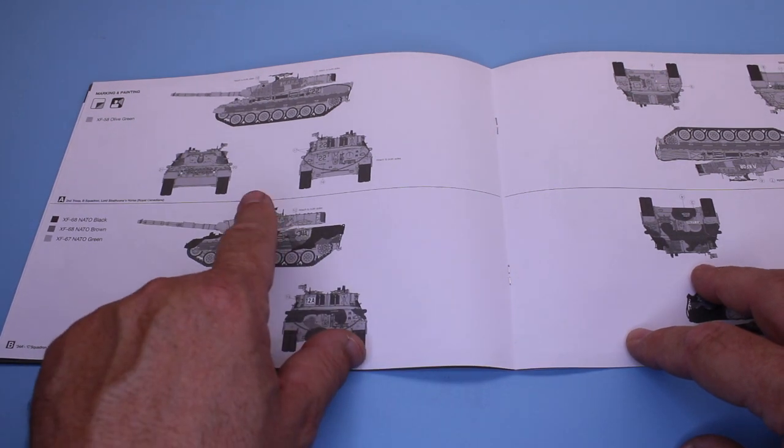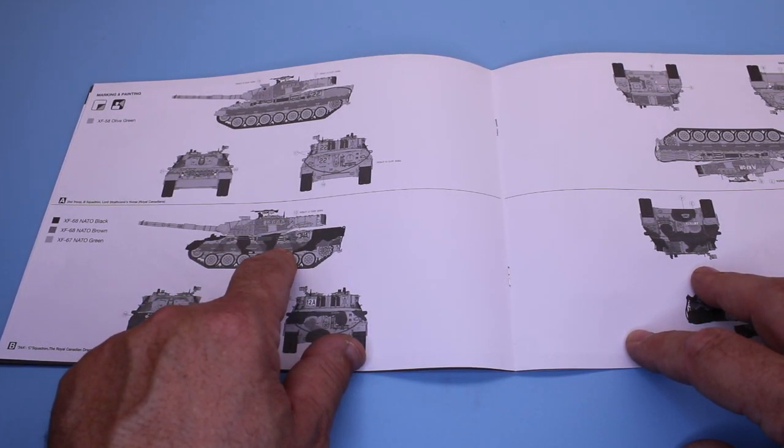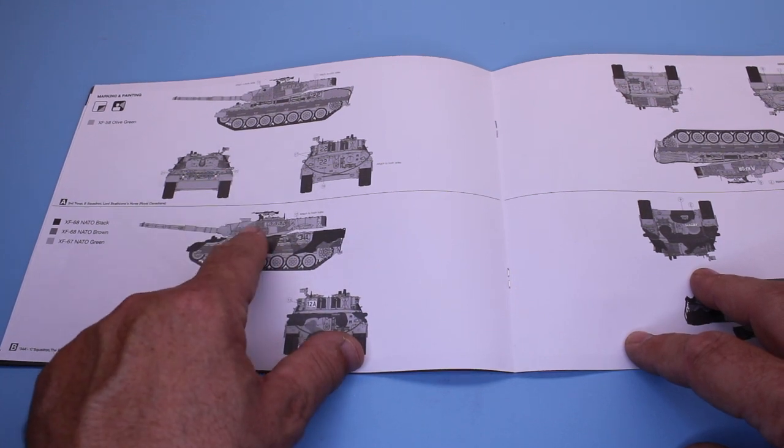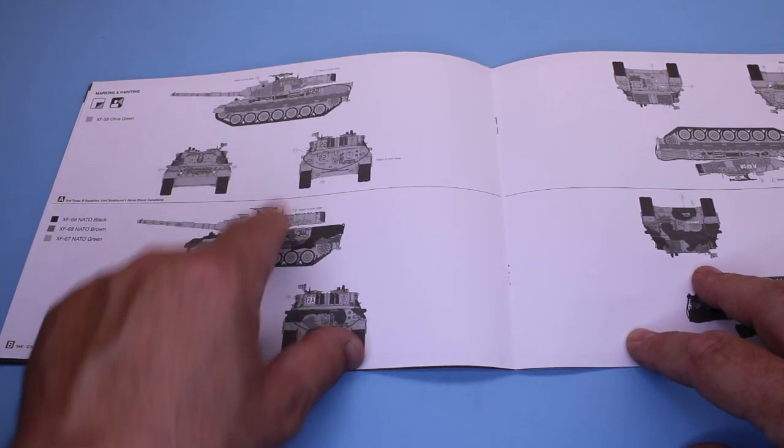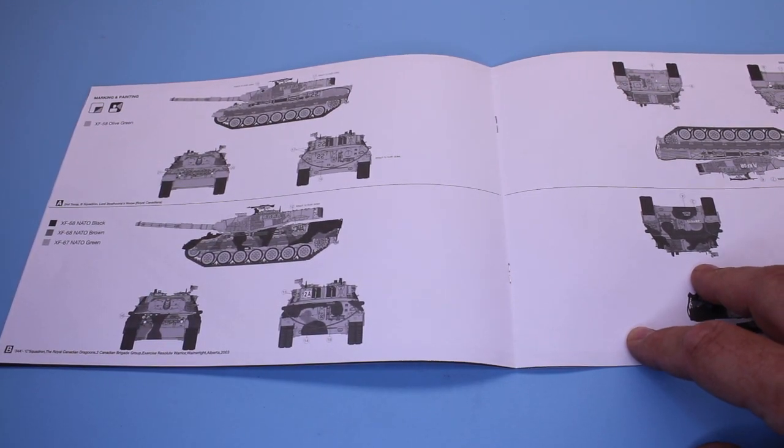And then you get into your paint scheme. What's interesting about this is, the lower part of the body is in the NATO tri-color, but the turret's green. So, I thought that was interesting, and looking at some pictures, I found pictures that showed the same thing. So, it's an interesting look.